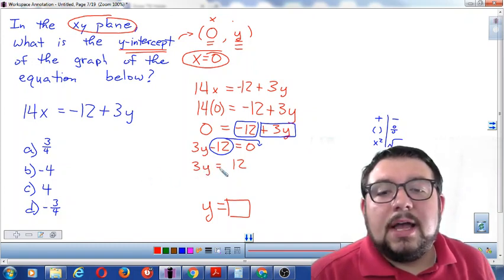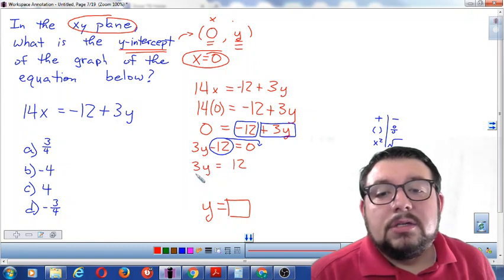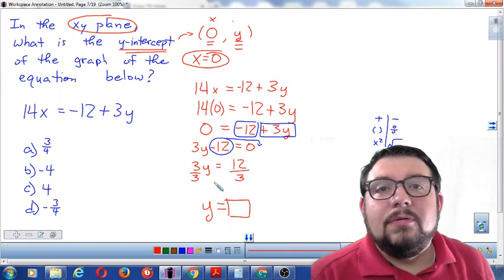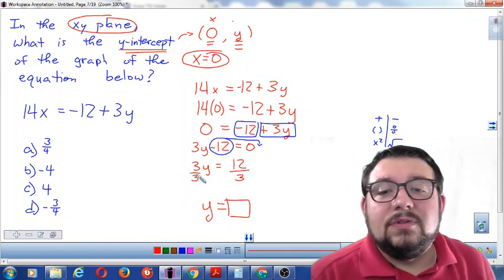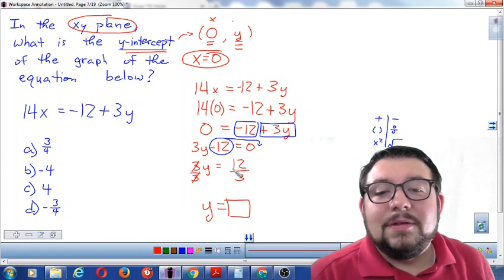Alright, now I see 3 times y equals 12, but I want y to be alone. Well I'm going to look at my map again and see that 3 is multiplying with y. So in order to get rid of multiplying with 3 I have to divide by 3. And on this side I will also divide by 3 because every teacher in the whole world has probably said a million times, if you do it on one side you have to do it on the other. Okay, so y equals 12 over 3, 12 divided by 3 is 4. So my final answer is y equals positive 4. That would be answer C.